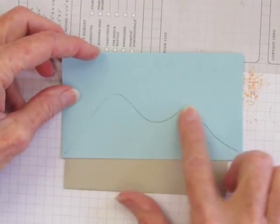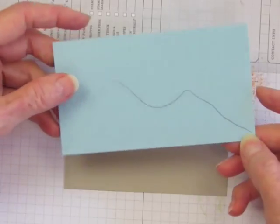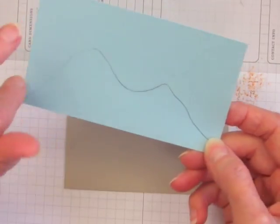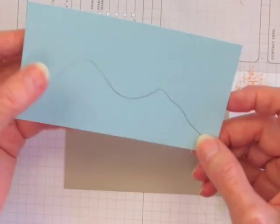You might want to draw a pencil outline of the shape that you want your mountains to be in because you're tearing instead of cutting, it's going to be pretty approximate. You're not going to get it exactly right.